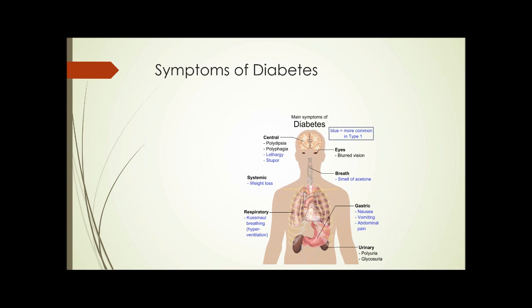This chart shows the symptoms of diabetes: lethargy, stupor, blurred vision, weight loss, breath that smells like acetone, nausea, vomiting, abdominal pain, hyperventilation — the list goes on.